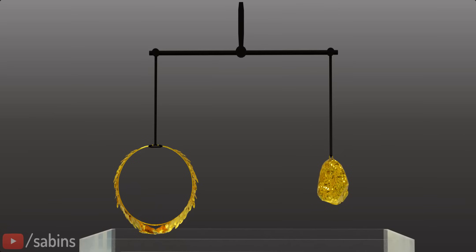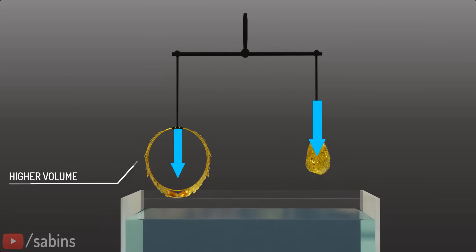Archimedes checked the purity of the gold by using a simple and brilliant experiment. A simple weight balance method. Both the crown and gold lump have the same weight. Assume the crown was impure. This means the crown will have a higher volume. He immersed the weight balance in water.